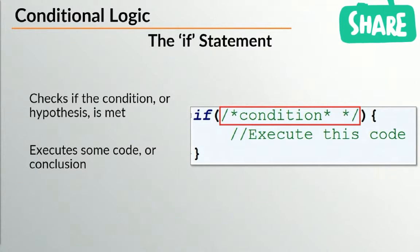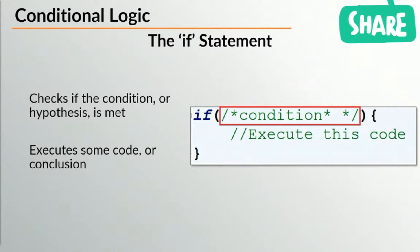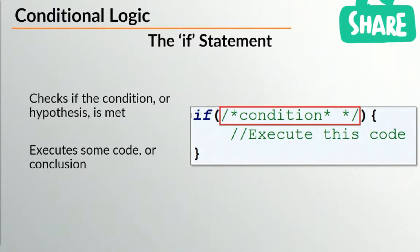Looking at the if statement structure: we have the 'if' keyword at the very beginning — that's the JavaScript keyword to create an if statement. After that, you have opening and closing circular brackets, then opening and closing curly brackets, much like a function, except we don't have to name it. Between the circular brackets we input our condition — anything that returns a Boolean value. If that condition resolves to true, the code between the curly brackets executes. It could be 90% of your web application or just a small portion — it's what you want to happen when the Boolean is true.